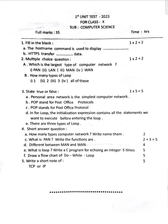Question C — What is PAN? Write the function. 2 plus 3, five marks total. Question D — Write the difference between MAN and WAN, worth 4 marks. Question E — What is a loop in a C program?